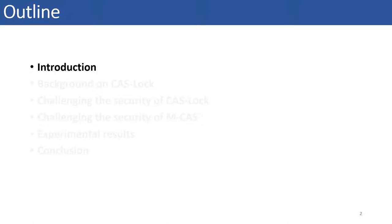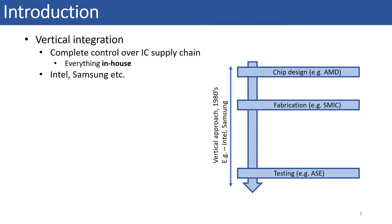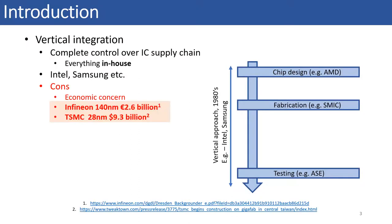Let's start with the introduction. Before 1980s, the integrated circuit supply chain used to follow a vertical approach, where single company used to own and operate every stage of the IC supply chain including fabrication. But with subnanometer technology, the cost of fabrication increased. For example, it costed Infineon 2.6 billion euros to set up and operate a 140 nanometer technology fab, whereas for TSMC, the cost of owning a 28 nanometer fab is around 9.3 billion dollars.